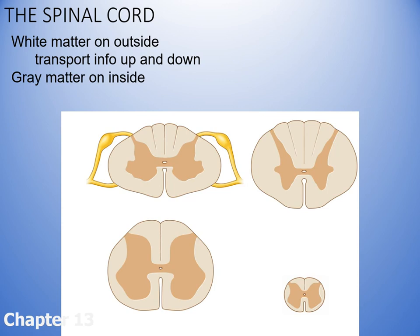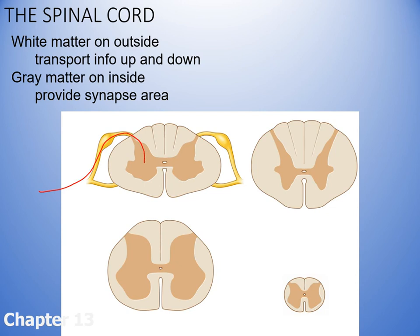The gray matter is always on the inside in the spinal cord. Note that this is different in the brain — the brain has gray matter on the outside and white matter on the inside. The gray matter provides an area where neurons can synapse. As you may have seen in the spinal reflexes video, sensory neurons enter the spinal cord and synapse with motor neurons that then leave and control skeletal muscle.